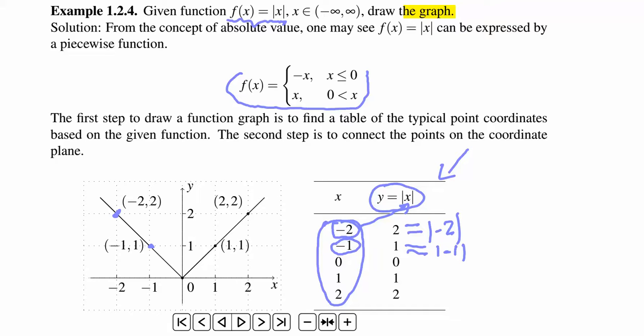When x is 0, then the absolute value of 0 is 0. So you have 0, 0 is on the graph.